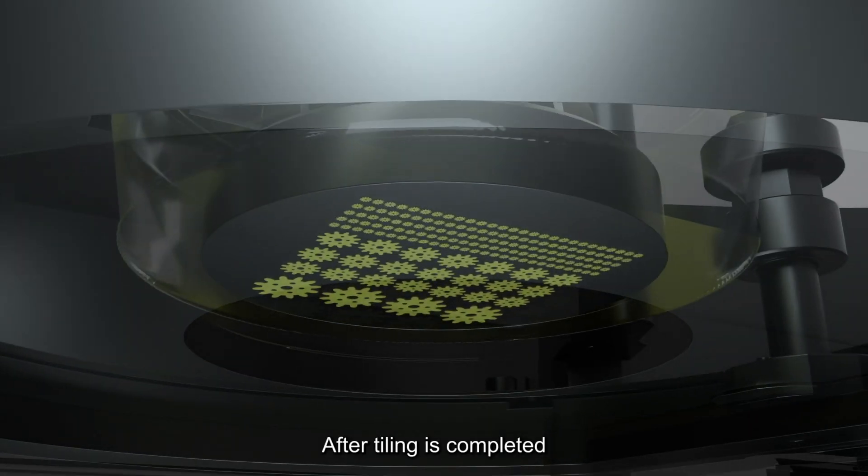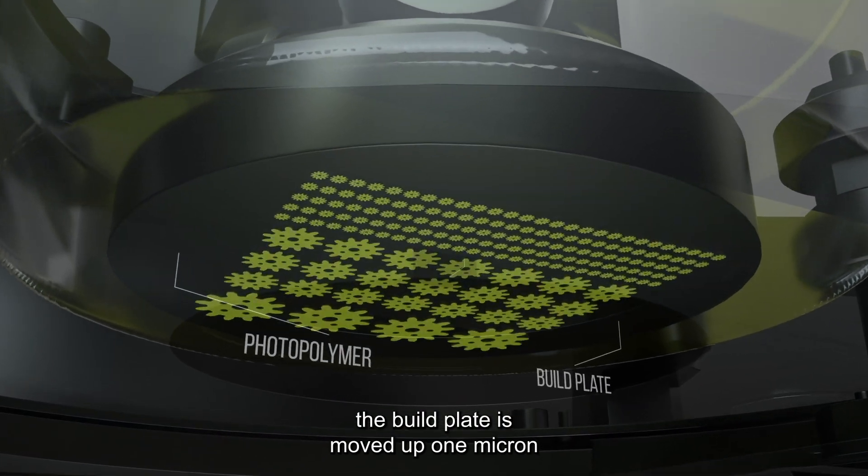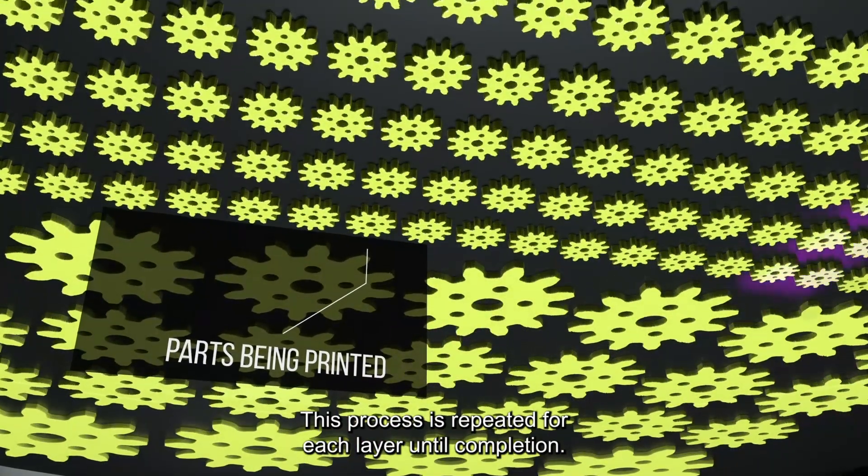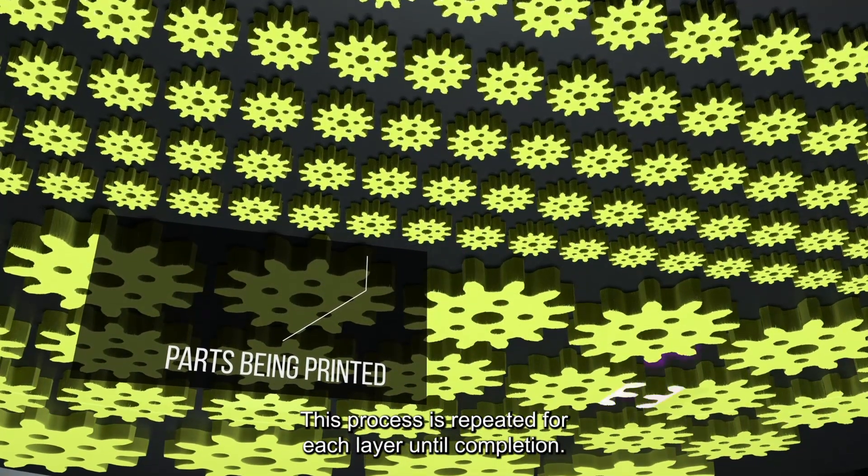After tiling is completed, the cube is moved up 1 micron, making room for the next layer to be projected. This process is repeated for each layer until completion.